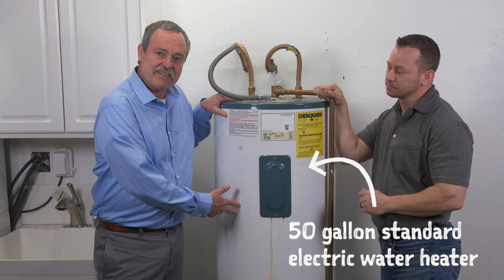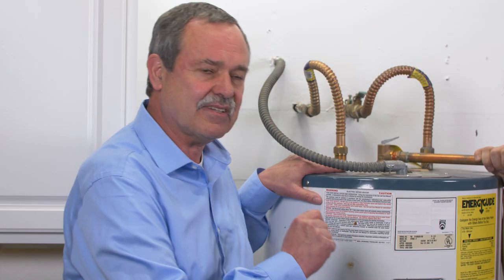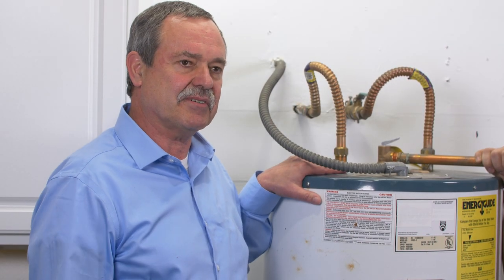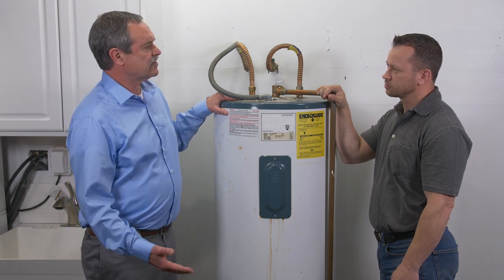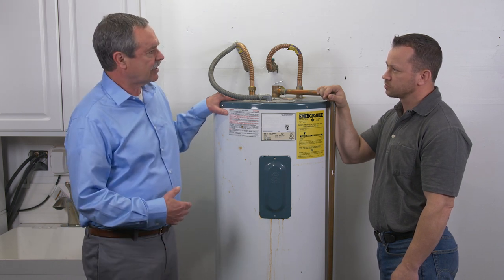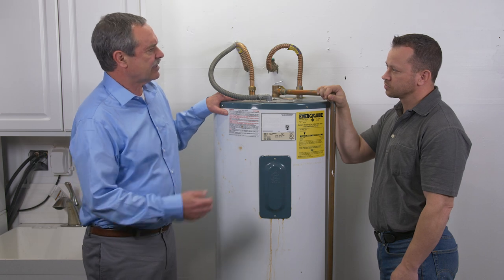Here we have the tank that we've decided to replace. It's old, it's leaking, it's rusting. And of course, we have pulled the necessary permits. In our previous discussion, Wade, you mentioned that there are some differences between installing a standard electric water tank and a heat pump water heater. What are they?